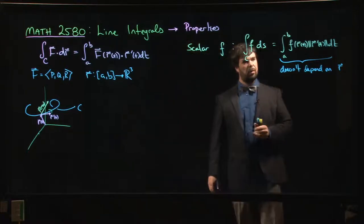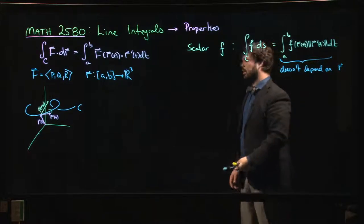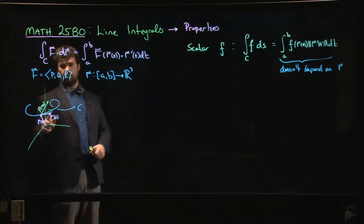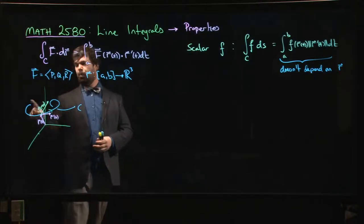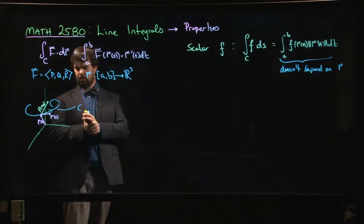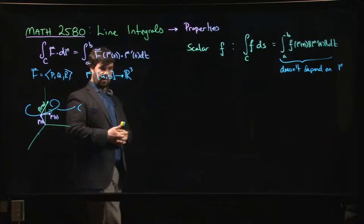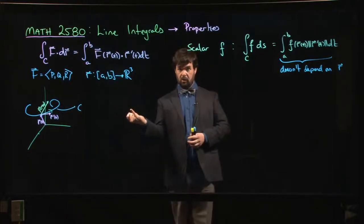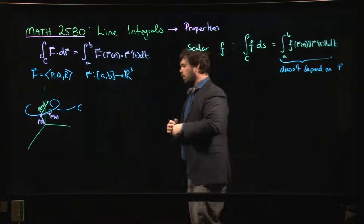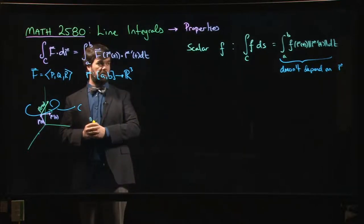The fact that it doesn't depend on parameterization is why you have the magnitude of r' in the integrand — it accounts for the fact that depending on the parameterization, your r(t) might trace out the same points along the curve as someone else's, but the speed at which you trace them out might differ. That means the magnitude of r' might be different, but that's accounted for in the integral.